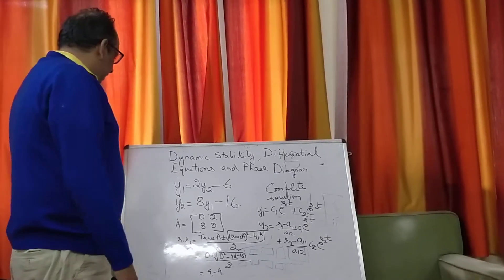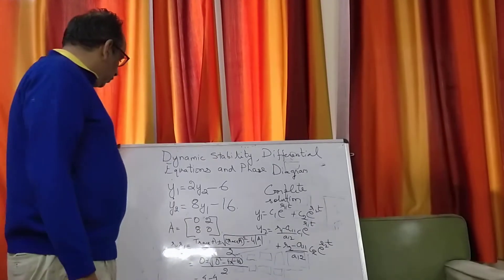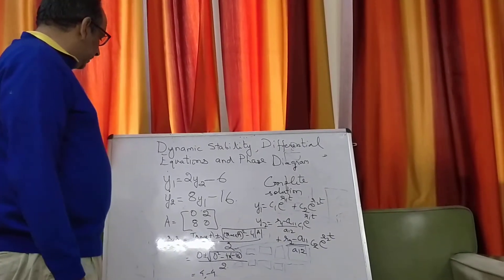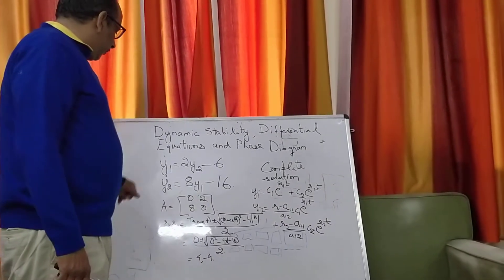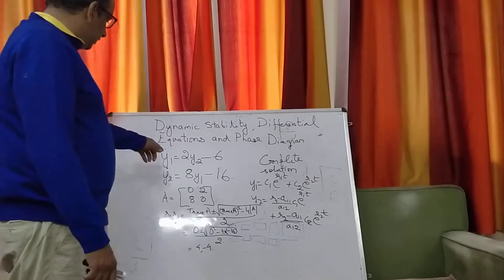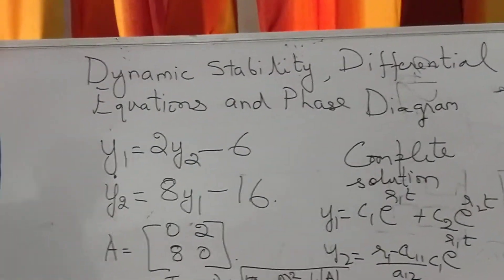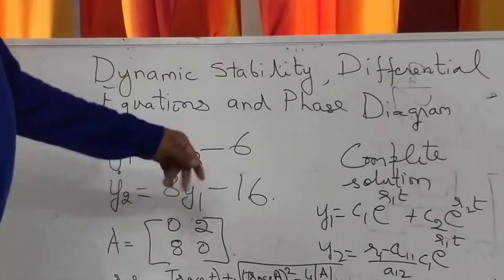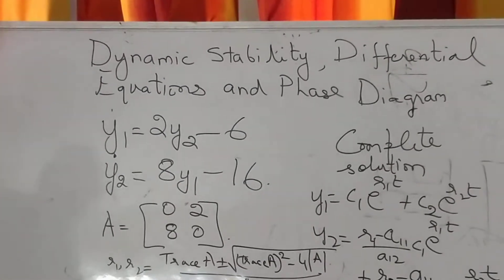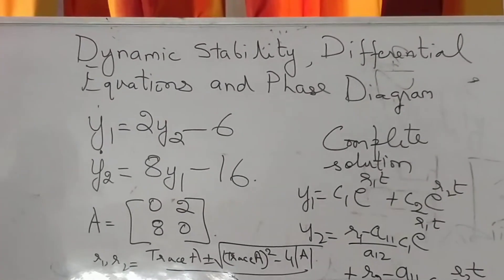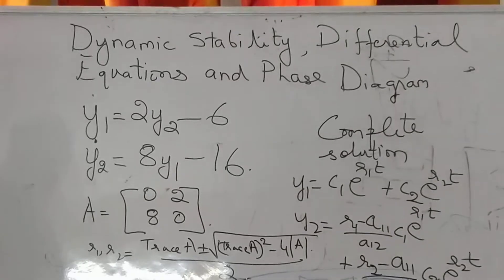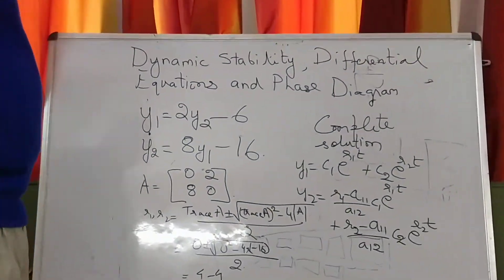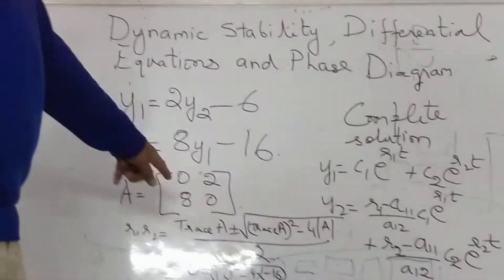I have this equation for you: y1-dot, that is the differential of y1 with respect to time, is equal to 2y2 minus 6, and y2-dot is equal to 8y1 minus 16. The A matrix associated with this is [0, 2; 8, 0].